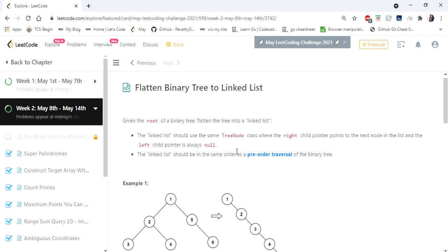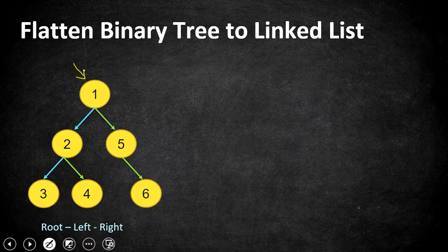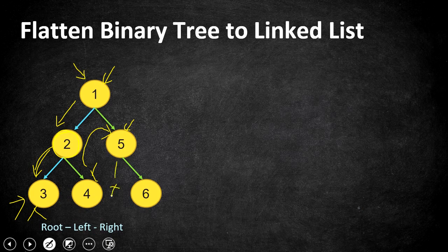Let's understand this problem with an example. Given the input binary tree, the linked list should be in the order of pre-order traversal. Pre-order traversal visits the root node first, then the left node, then the right node. Starting from the root, the first node goes into our linked list, then we move down to the left node which is 2, then its left child 3, then the right child 4, and then we backtrack to the right node of the actual root.